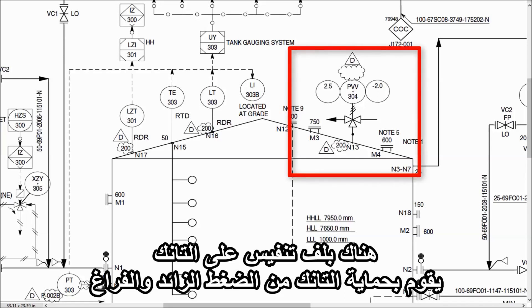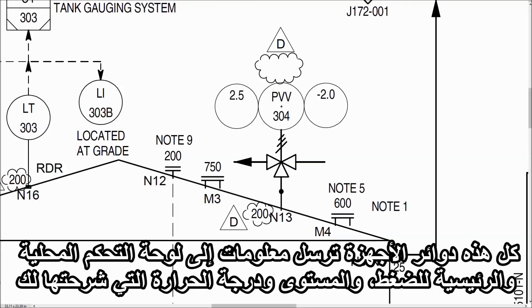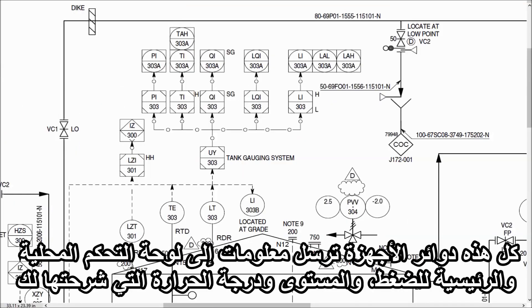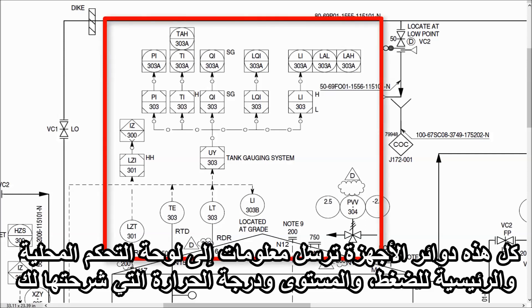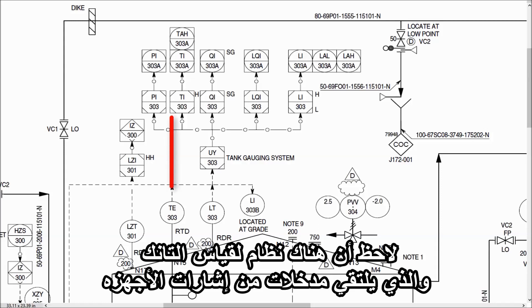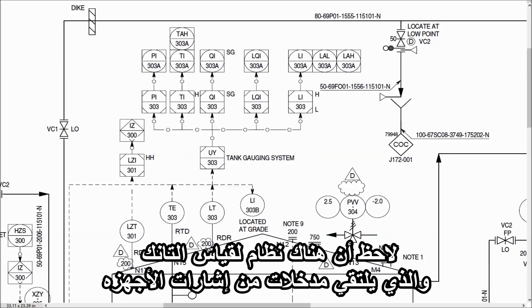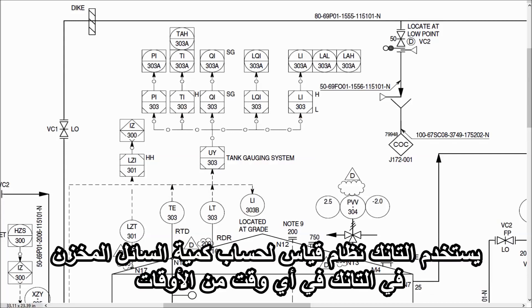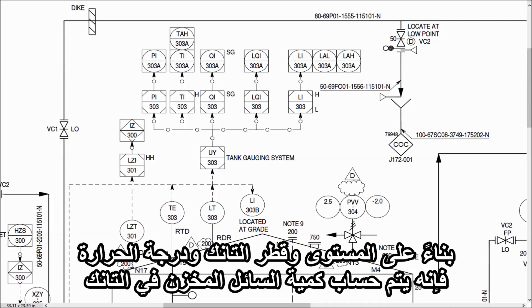There is a breather valve on the tank, which protects the tank from overpressure and vacuum. All these instrument bubbles send information to the local and main control panel for the pressure, level, and temperature instruments explained earlier. You may have noticed there is a tank gauging system that receives all input signals from the instruments. The tank gauging system is used to calculate the quantity of liquid stored in the tank at any given time — based on diameter, level, and temperature, it calculates the quantity stored.